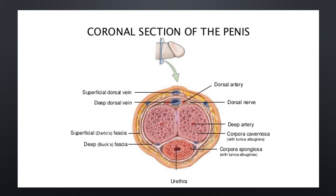The dartos is a layer of connective tissue found in the penile shaft and foreskin — which is the part removed during circumcision — and the scrotum. The penile portion is referred to as the superficial fascia of the penis or the subcutaneous tissue of the penis, while the scrotal part is the dartos proper.